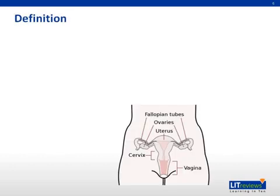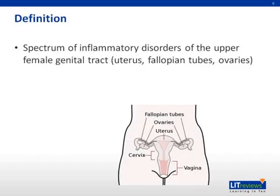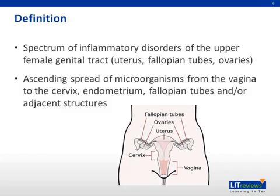Pelvic inflammatory disease is a spectrum of inflammatory disorders of the upper female genital tract, which includes the uterus, fallopian tubes, and ovaries. It is believed to be caused by ascending spread of microorganisms from the vagina to the cervix, endometrium, fallopian tubes, and or adjacent structures.